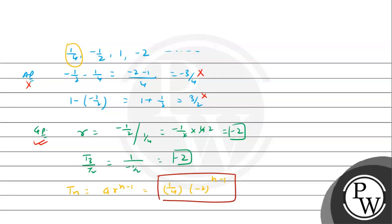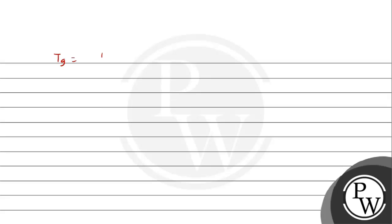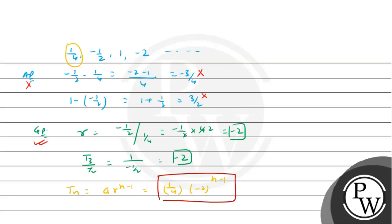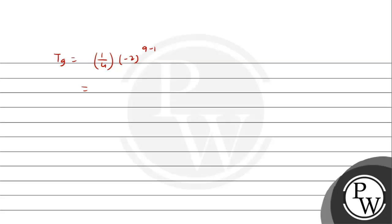Now to find the 9th term, we plug in n = 9. So T9 = (1/4) times (minus 2) raised to the power (9 minus 1) = (1/4) times (minus 2) raised to the power 8. Since the power is even, minus 2 raised to the power 8 is simply 2 raised to the power 8, which is 256. So T9 = 256 by 4 = 64.